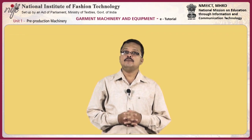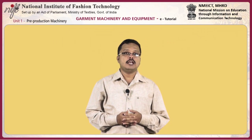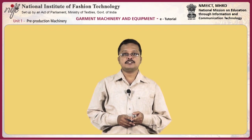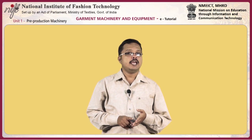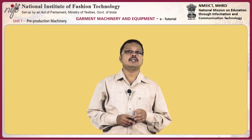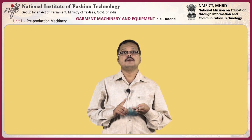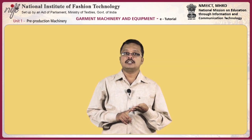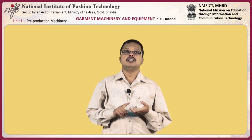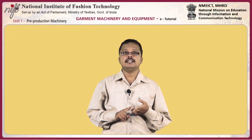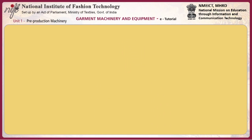Now you have come to the end of this unit. To summarize, in this unit you have learnt about spreading surfaces and spreading machines. You have also been given an overview of common cutting machines such as the straight knife cutting machine, the round knife cutting machine, the band knife cutting machine, the end cutter, notcher, and driller, and reviewed the practice of cutting a lay using common cutting machines. Thank you.